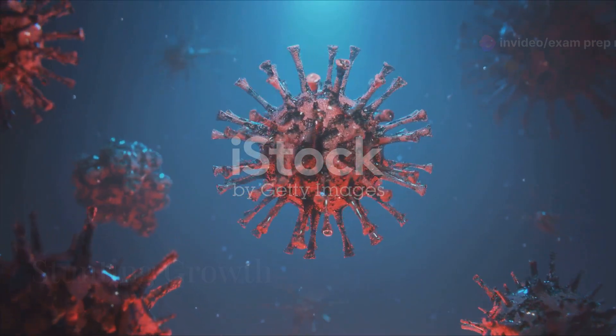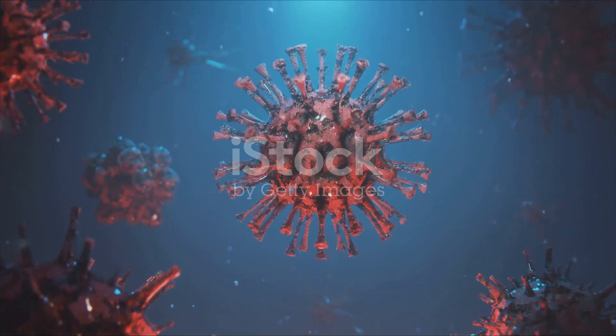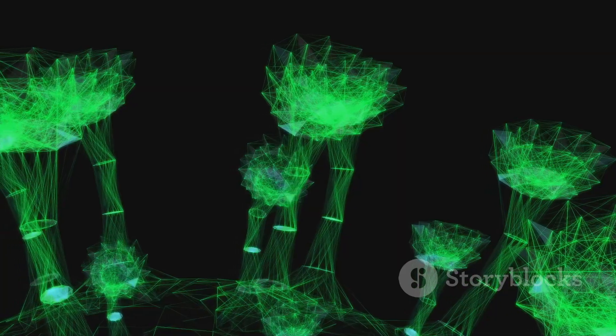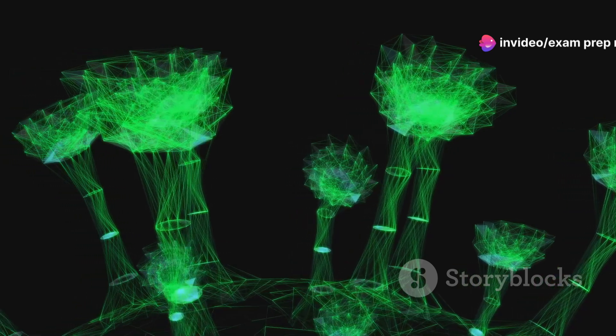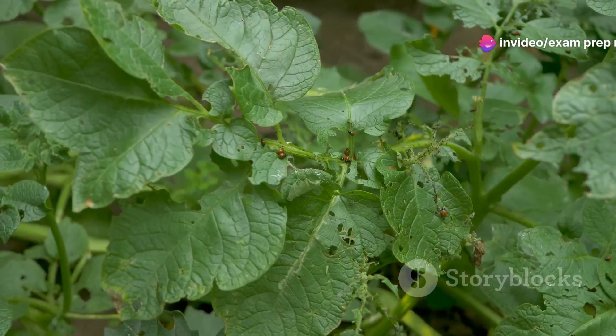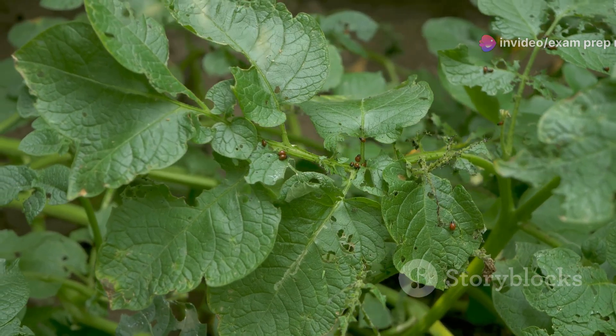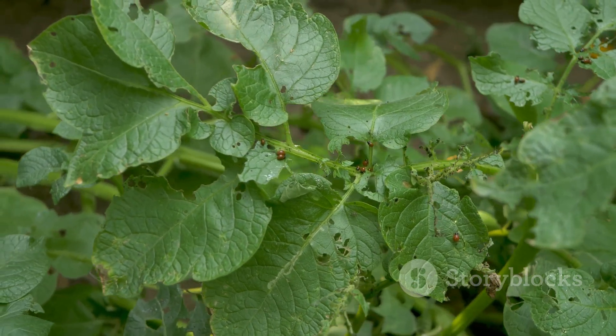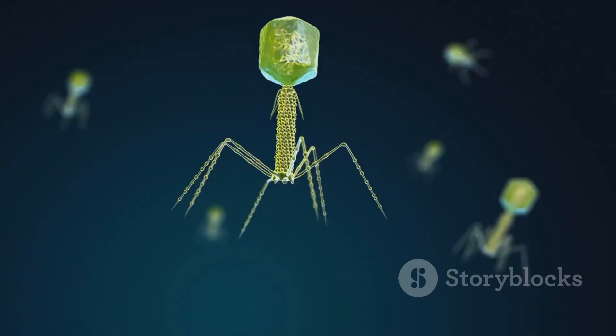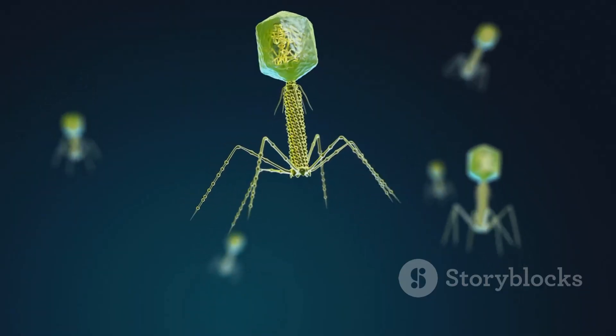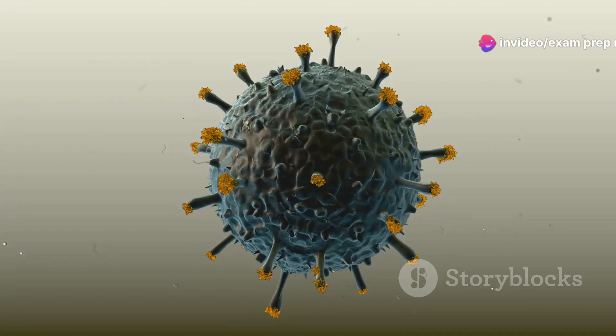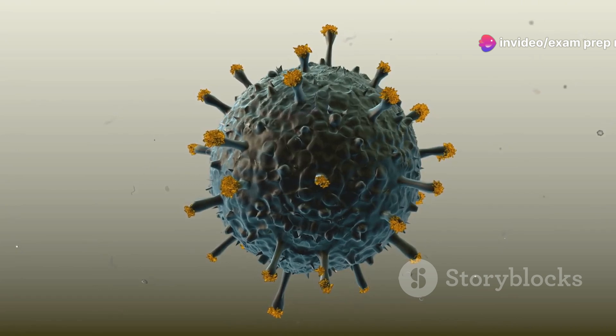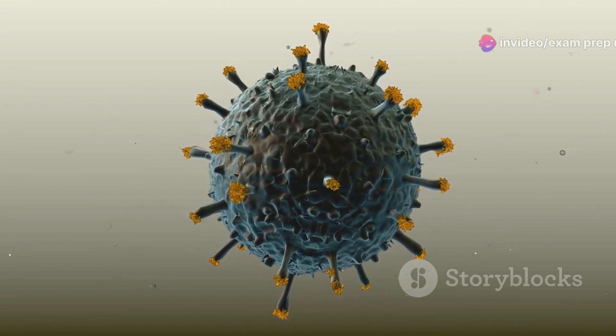One example of a viroid infection is potato spindle tuber viroid, or PSTVD, which infects potato plants. PSTVD causes the potato tubers to become elongated and misshapen, significantly reducing crop yield. The viroid infects the plant through wounds and spreads systematically, affecting the entire plant. PSTVD illustrates the significant economic impact viroids can have on agriculture.